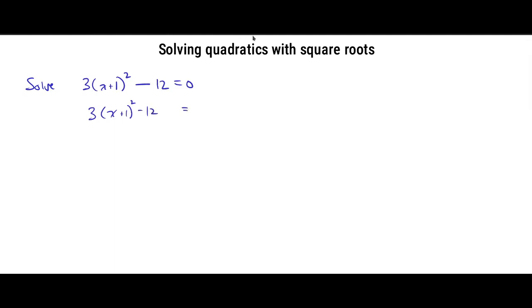We cancel that out with a plus 12. Minus 12 plus 12 cancels out. That leaves 3(x+1)² equals 12.